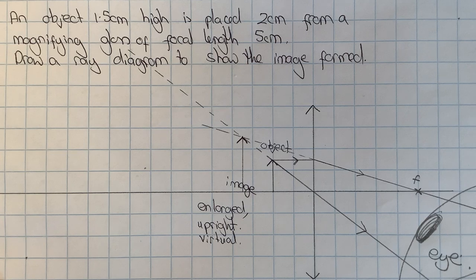So there you are, that's how to draw the ray diagram for a converging lens acting as a magnifying glass.